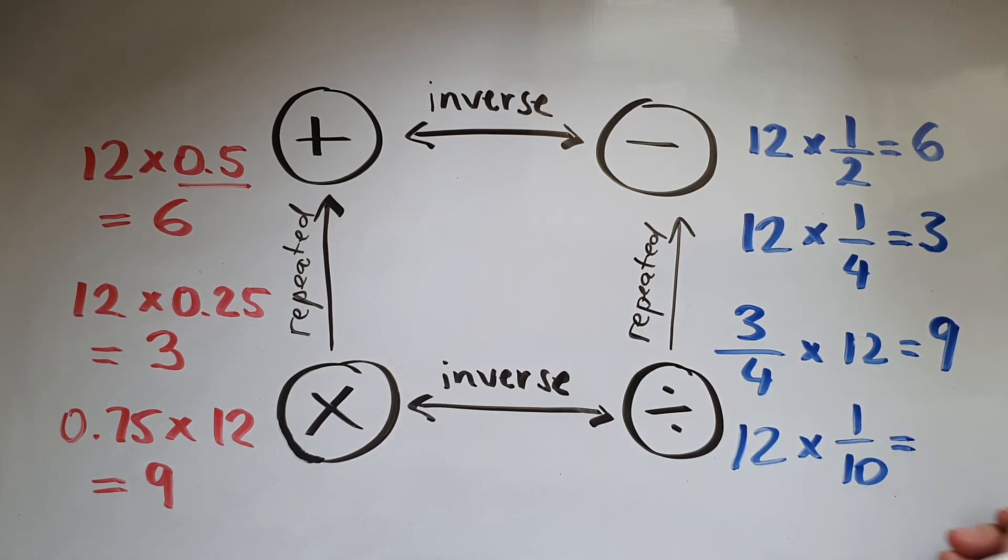So that is the same as dividing 12 by 10, which is going to give me 1.2. Or if I multiply 12 by 1 fifth,